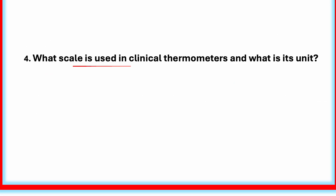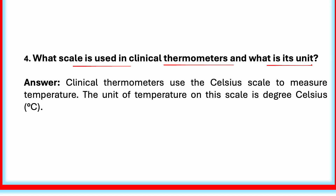What scale is used in clinical thermometers and what is its unit? Clinical thermometers use the Celsius scale to measure temperature. The unit of temperature on this scale is degree Celsius. For example, normal body temperature is 37 degree Celsius.